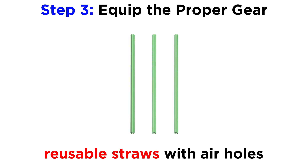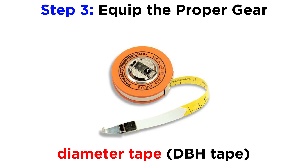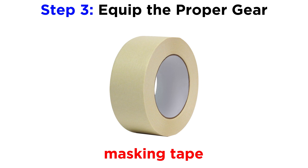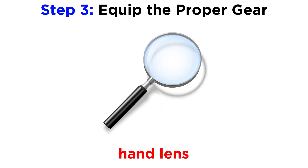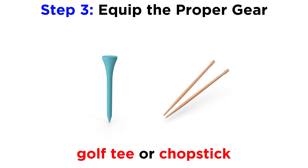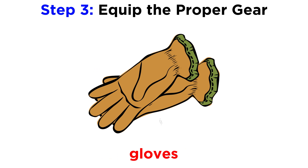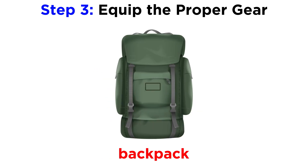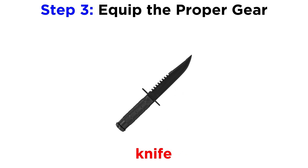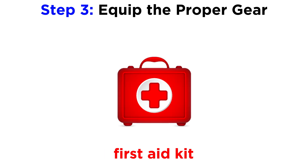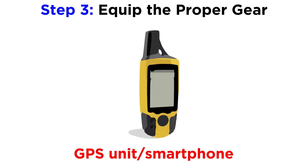Additional gear includes: reusable paper or plastic straws with punctured air holes for storing individual cores, ensuring they're wide enough to fit a core sample from the increment borer; diameter tape (also known as DBH tape); masking tape; permanent markers; a hand lens; beeswax; a golf tee or chopstick for removing stuck wood pieces; WD-40 with cloth pads for cleaning increment borers; gloves; rope; a good backpack; a compass; a knife; a sharpening kit; a first aid kit; a map; a camera; and a GPS unit or smartphone.